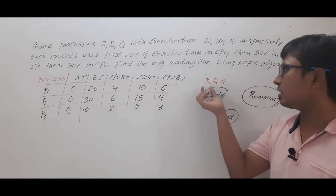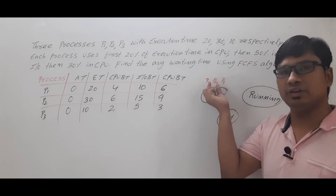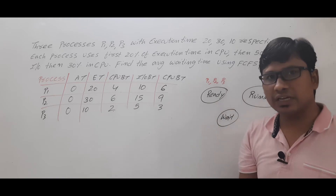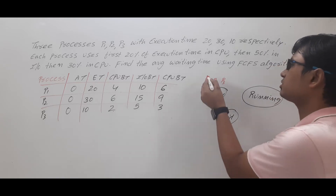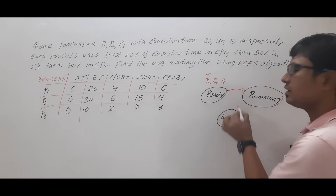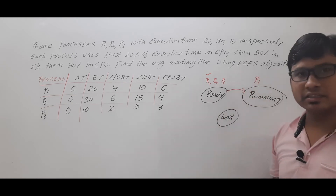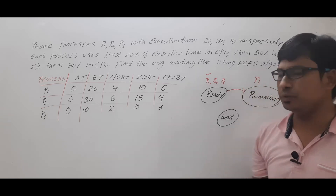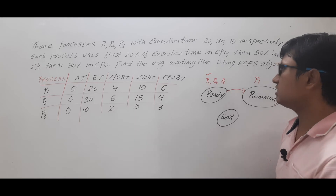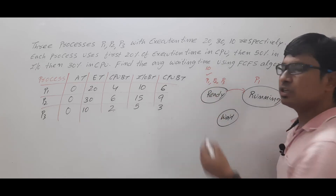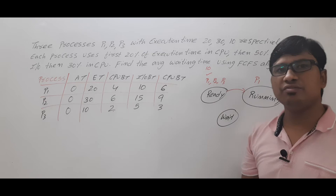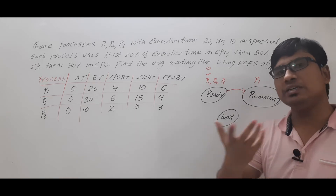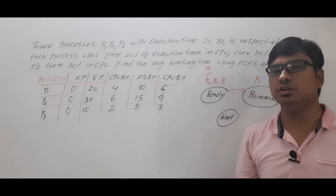As it is a first come first serve scheduling algorithm, we look at the arrival time. Process P1 arrived first, so P1 will be scheduled to the running state. Since FCFS is a non-preemptive scheduling algorithm, once a process gets the CPU it runs until it needs IO or completes. If it needs only CPU burst time, it will be given the entire time and then go to the terminated state.